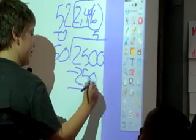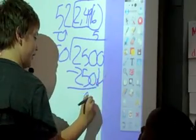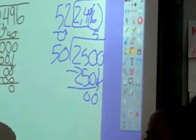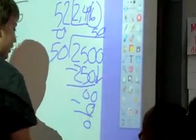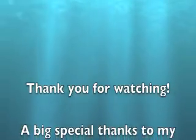If you divide 2,500 divided by 50, 50 will go into 25 five times.